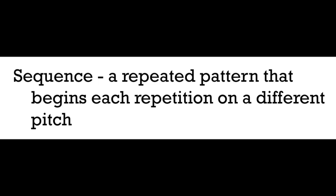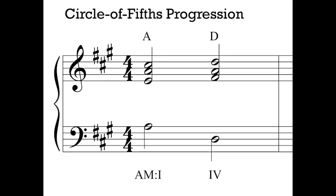Let's look at the most common harmonic sequence that we find in Western music. When we talk about a sequence harmonically, we often talk about the root movement of the sequence — the intervals in the roots of the chords. In this case, we have an A major triad moving to a D major triad. This is a descending fifth when we talk about the roots of those chords, A going down to D, and this is the start of our most common chord progression, which we call the circle of fifths progression.